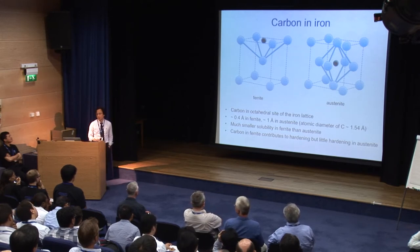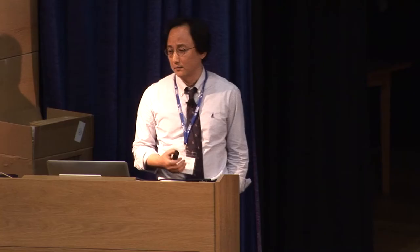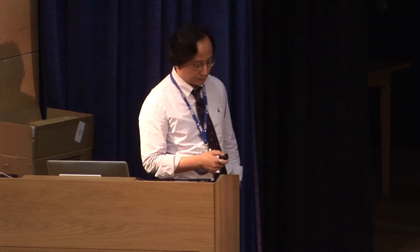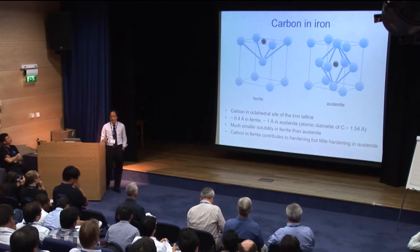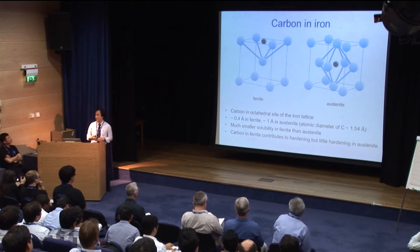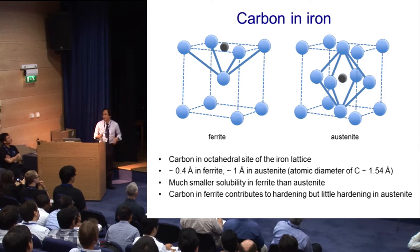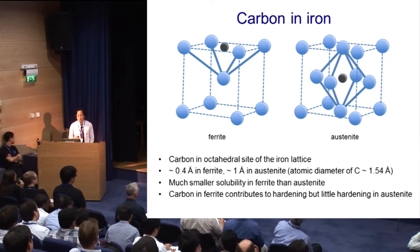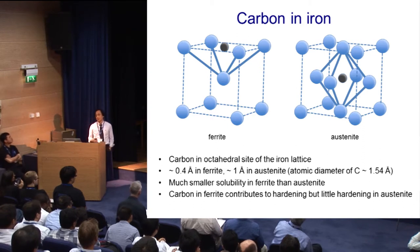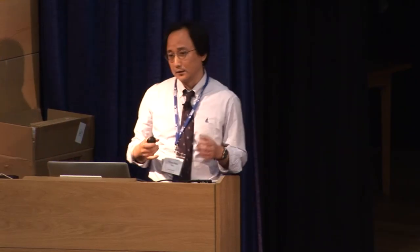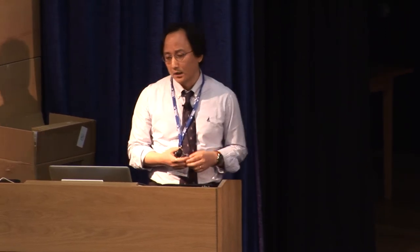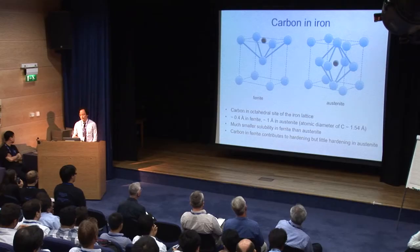Saying something about the non-cubicity of ferrite, it will be good to start with the behavior of carbon in iron. The crystal structure of ferrite and austenite — I draw the two unit cells in the same scale, but actually the unit cell of ferrite is smaller than austenite. Carbon usually occupies the octahedral site in both iron lattices, and the size of the octahedral site is smaller than the diameter of carbon in both cases, distorting the lattice. Moreover, the octahedral site in ferrite is much smaller than in austenite, leading to smaller solubility of carbon in ferrite.